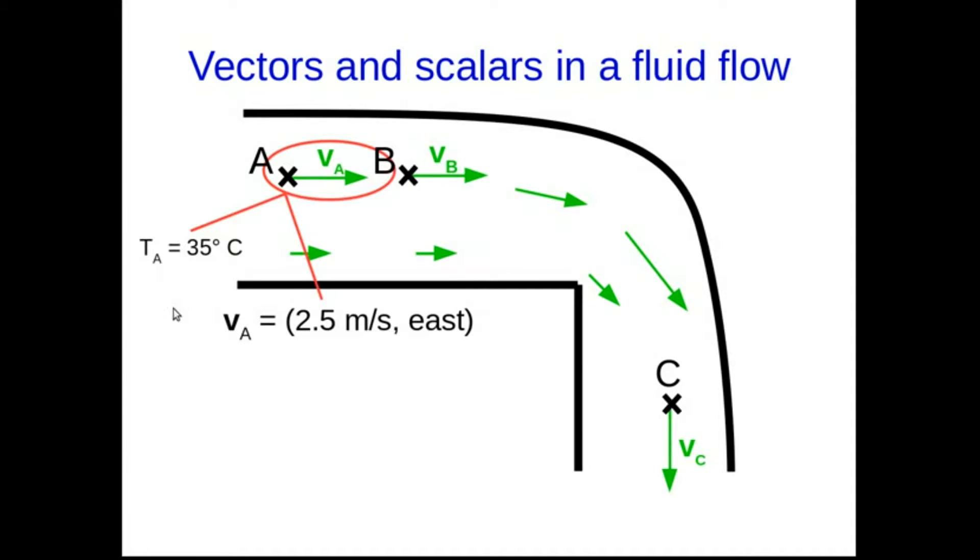And now compare writing down, say, the temperature at A. Let's say this is pretty hot water in a factory or something, it's 35 Celsius at point A, as opposed to if I'm going to write down the vector VA, it might be 2.5 meters per second east.